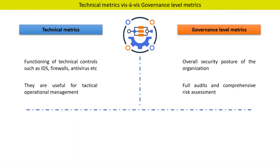Let us now understand technical metrics and governance level metrics. Technical metrics help us understand the functioning of technical controls such as IDSs, firewalls, antivirus, etc. Technical metrics are useful for tactical operational management. However, these metrics have very little value from a governance standpoint.